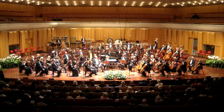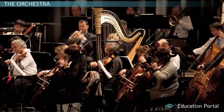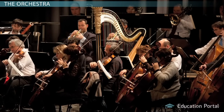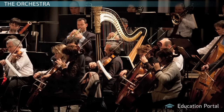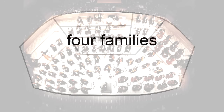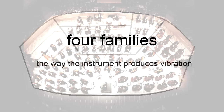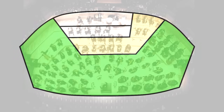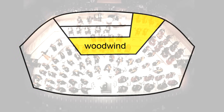The orchestra is a group of musicians getting together to make music. We can break the instruments into four families, each grouped by the way the instrument produces vibration. This gives us the string family, the woodwind family, the brass family, and the percussion family.